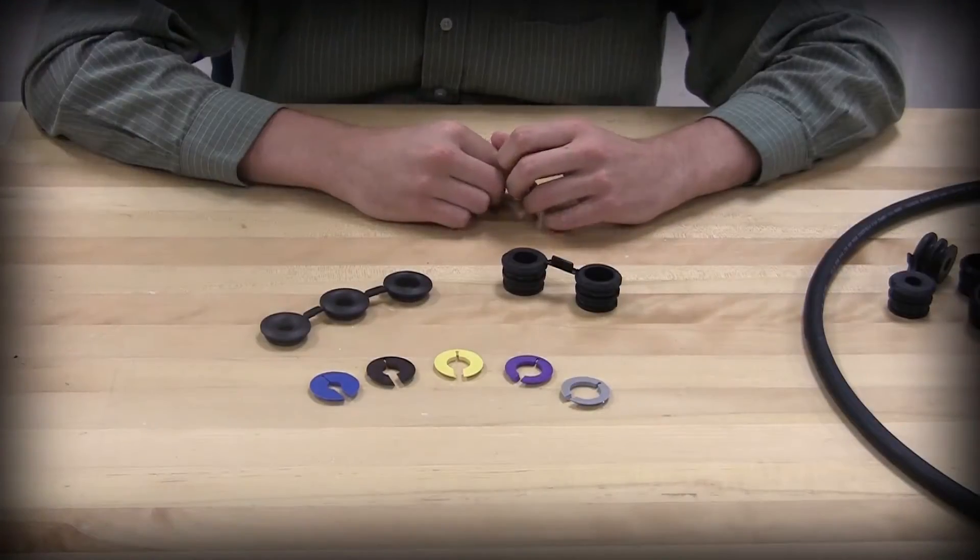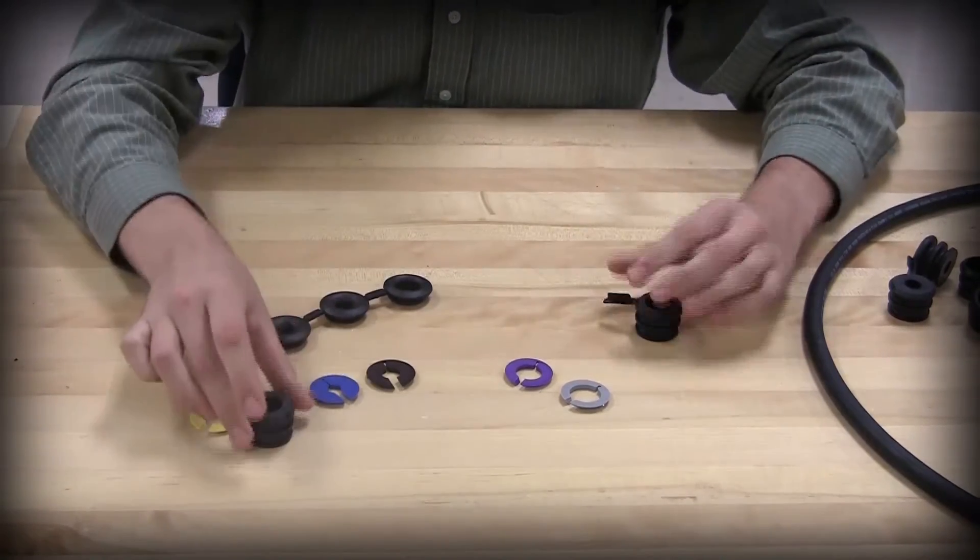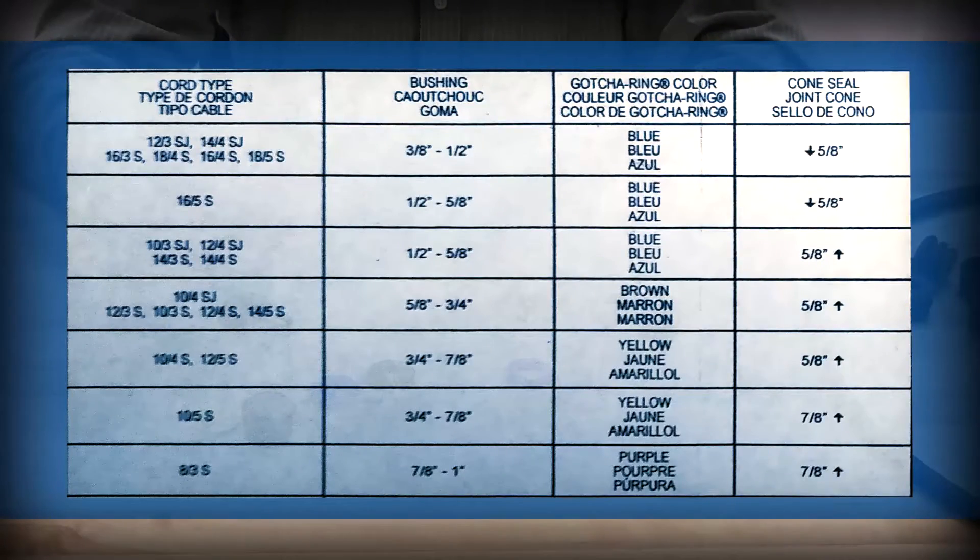Based on the cord type and diameter, select the appropriate gotcha ring, rubber bushing, and cone seal. Refer to the chart in the instructions for sizing information.